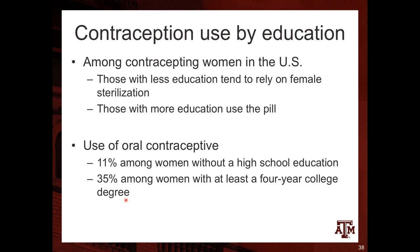In terms of contraception variation by education, among contraceptive women in the US, those with less education tend to rely on female sterilization, while those with more education use the pill. Use of oral contraceptives is 11% among women without a high school education and 35% among women with at least a four-year college degree. Less educated women tend to rely more on female sterilization, while more educated women show a higher percentage of pill use.